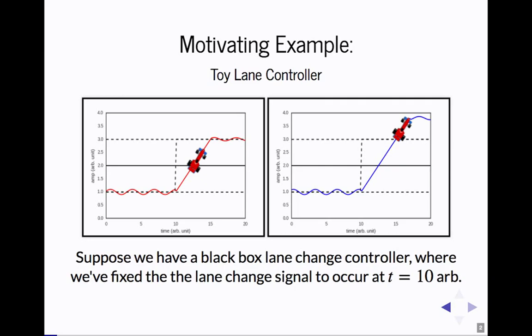I want to start with a motivating example. Consider this toy lane controller. On the left here, we have a car that's tracking a lane, and at time equals 10, the car receives a lane change command, and so it moves from the bottom lane to the top lane and then begins tracking the top lane. And the one on the right, we have a similar situation, but you can see that the car overshoots the lane. What we want to be able to do is quantify that the left trace is somehow a better lane change than the right trace.